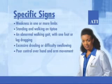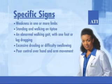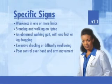Typically, the parent or care provider notices that the child does not achieve developmental milestones at the expected age. Some specific signs that indicate cerebral palsy include weakness in one or more limbs, standing and walking on tiptoe, an abnormal walking gait with one foot or leg dragging, excessive drooling or difficulty swallowing, and poor control over hand and arm movement.